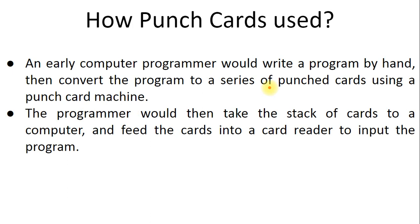How punch card works: early computer programmers would write a program by hand, then convert the program to a series of punch cards using a punch card machine. To run any program, at that time you couldn't just type and see on screen - screens weren't available. So programmers wrote programs by hand, then converted their code, and punched it into the punch card using a machine. The programmer would then take a stack of cards - each line of code on one card, the next instruction on the next card - and feed the stack into a card reader to input the data.